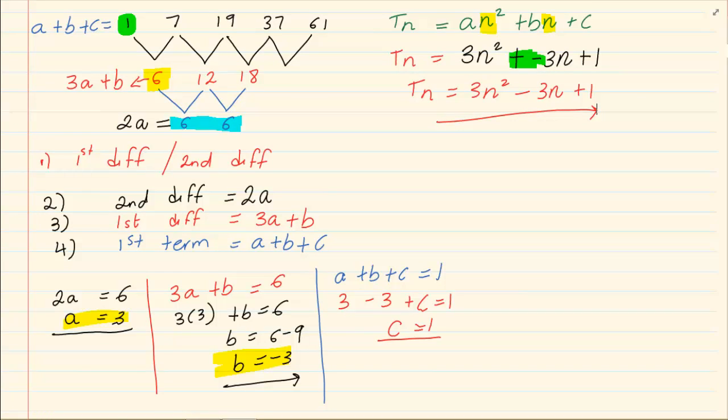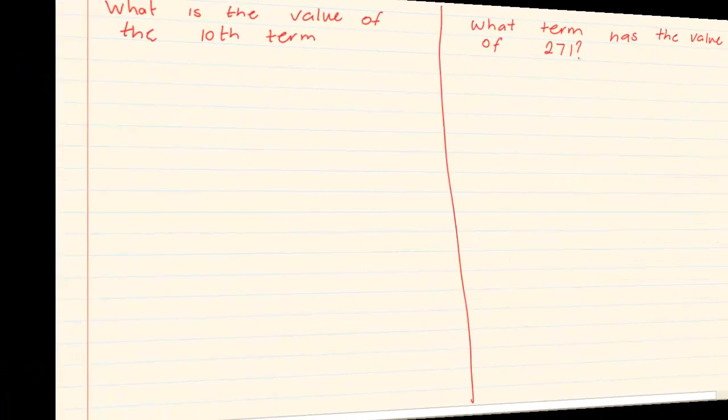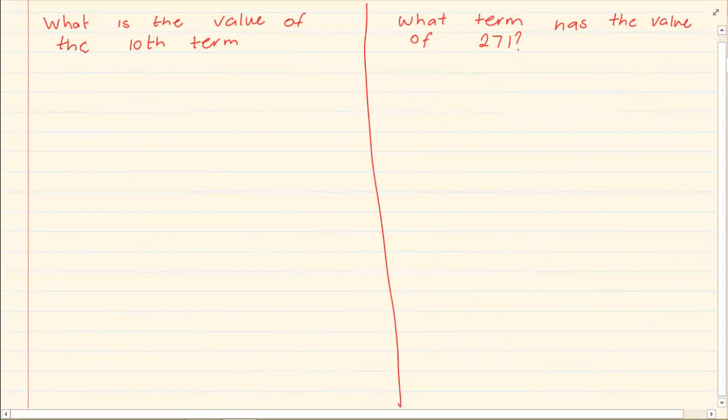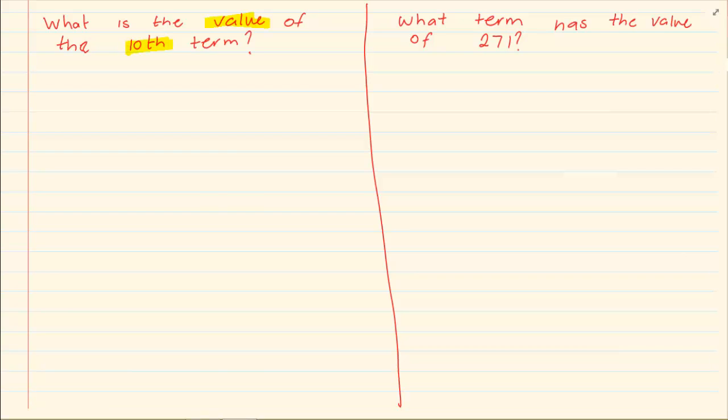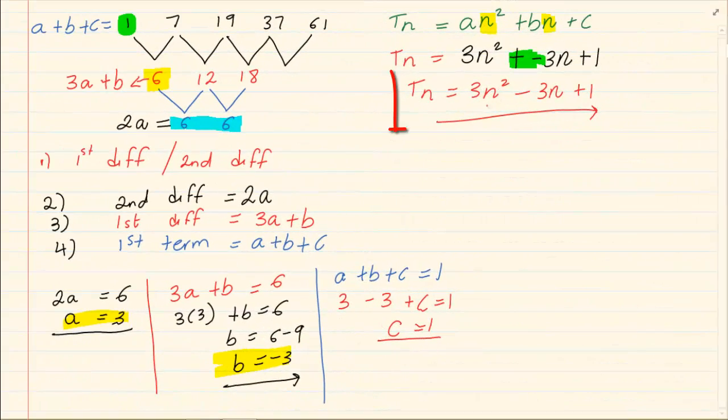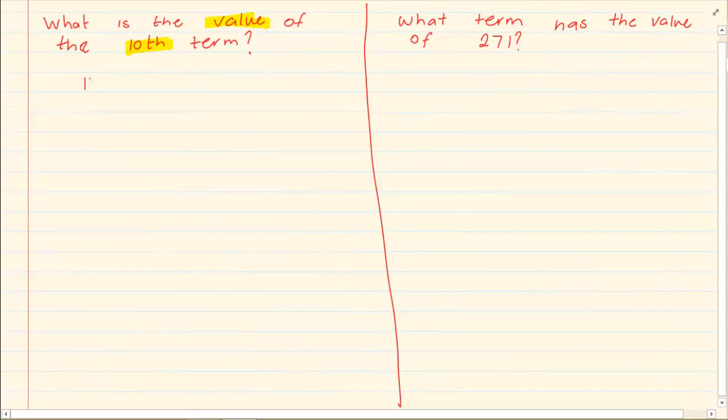Once we have the equation tn is equal to 3n squared minus 3n plus 1. What other questions can they ask us? If you look at the two questions, you will notice that they are slightly different. When they are asking you what is the value of the tenth term? Now you know that the equation is 3n squared minus 3n plus 1.